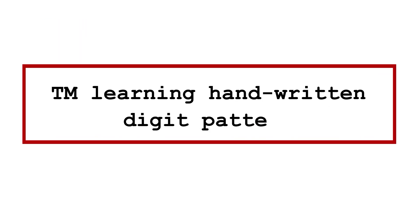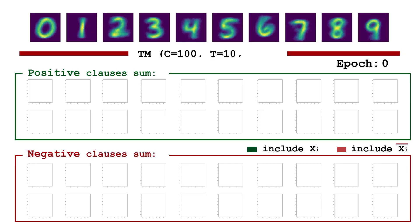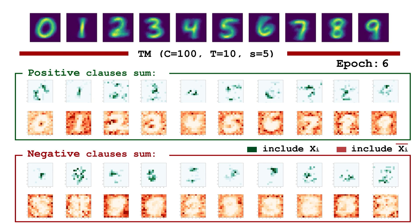This video shows how TM clauses are trained to classify the handwritten digits from the MNIST data set. Tsetlin Machine uses positive clauses to create class patterns and negative clauses to create anti-patterns.